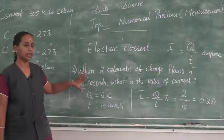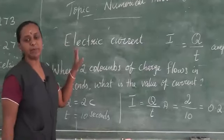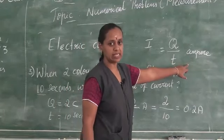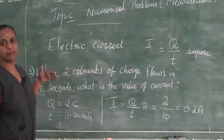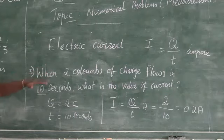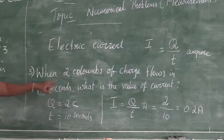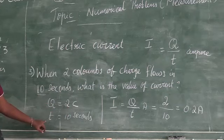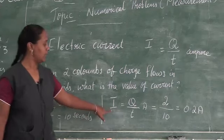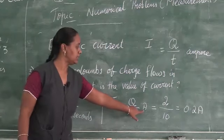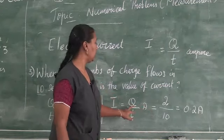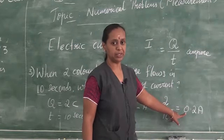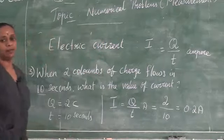To repeat: electric current is calculated using I = Q / T, where ampere is the SI unit. With Q = 2 coulombs and T = 10 seconds: I = 2 / 10 = 0.2 ampere.